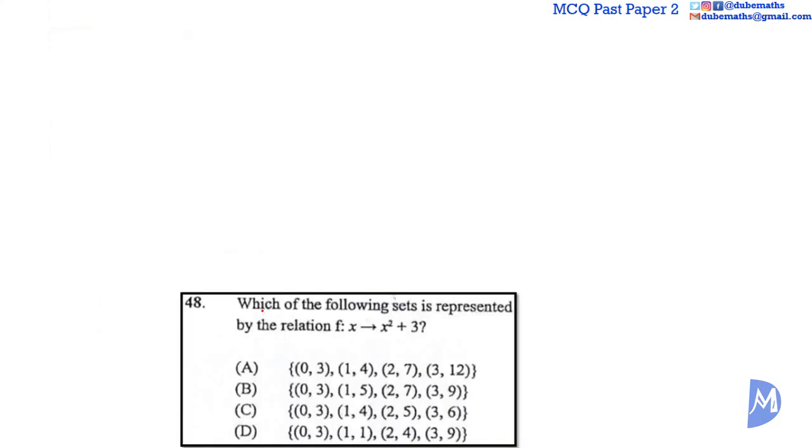Question 48. Which of the following sets is represented by F is a function such that X is mapped upon X squared plus 3? By examination, we see that the domain for all the answers are the same. Thus, the domain takes values from 0 to 3 inclusive. We can use each of these values and find their image to determine which answer is right.